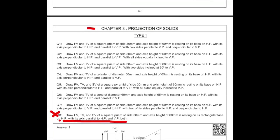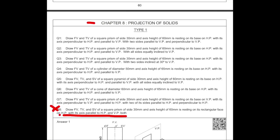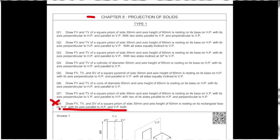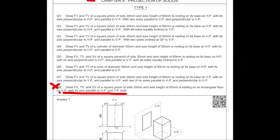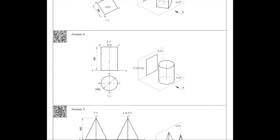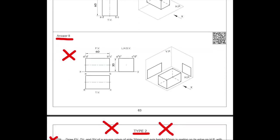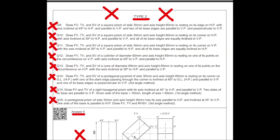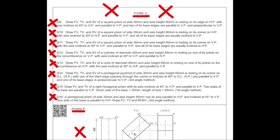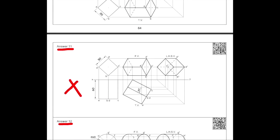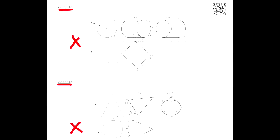In solids, axis parallel to HP and VP is not there — Type 1, axis parallel to HP and VP is not there, which is question number 8 in the book, so you can remove that. After that, Type 2 is completely wiped out; it is not there at all, so you don't have to study Type 2.